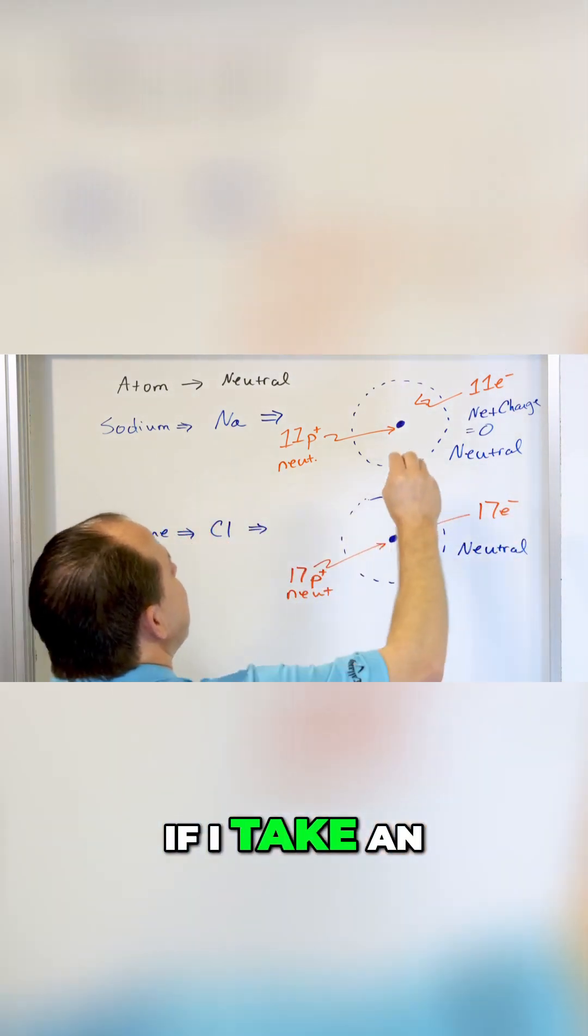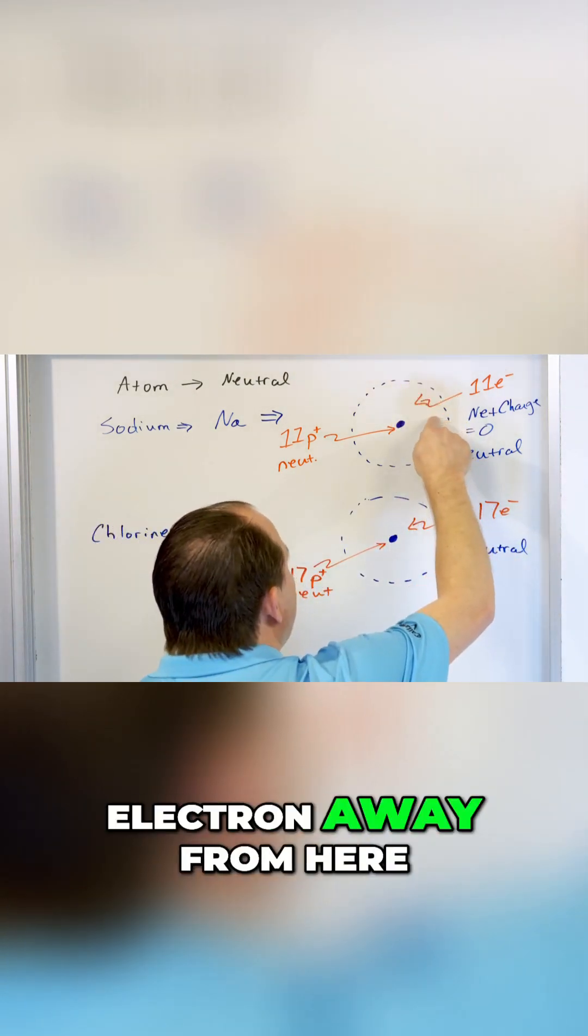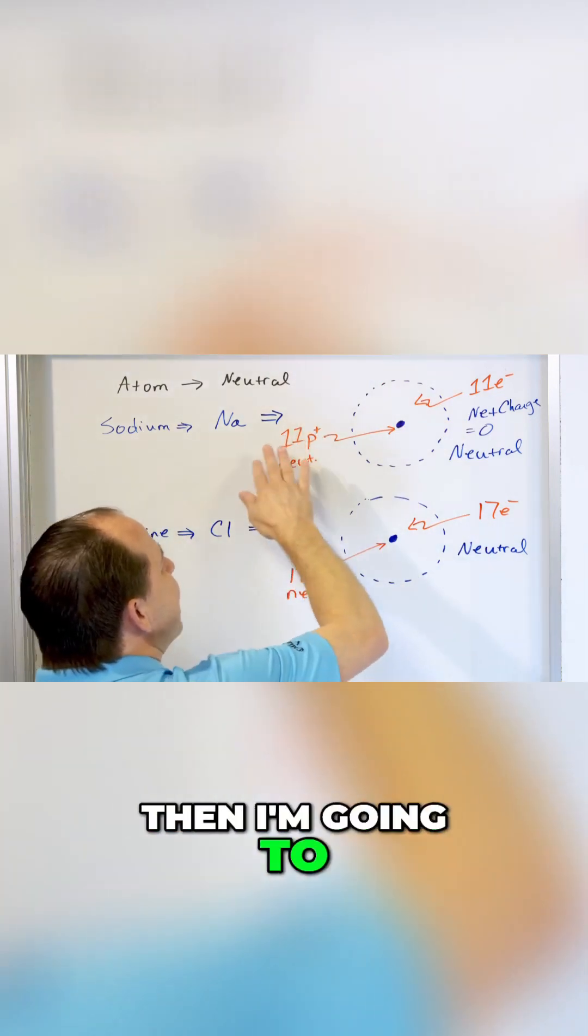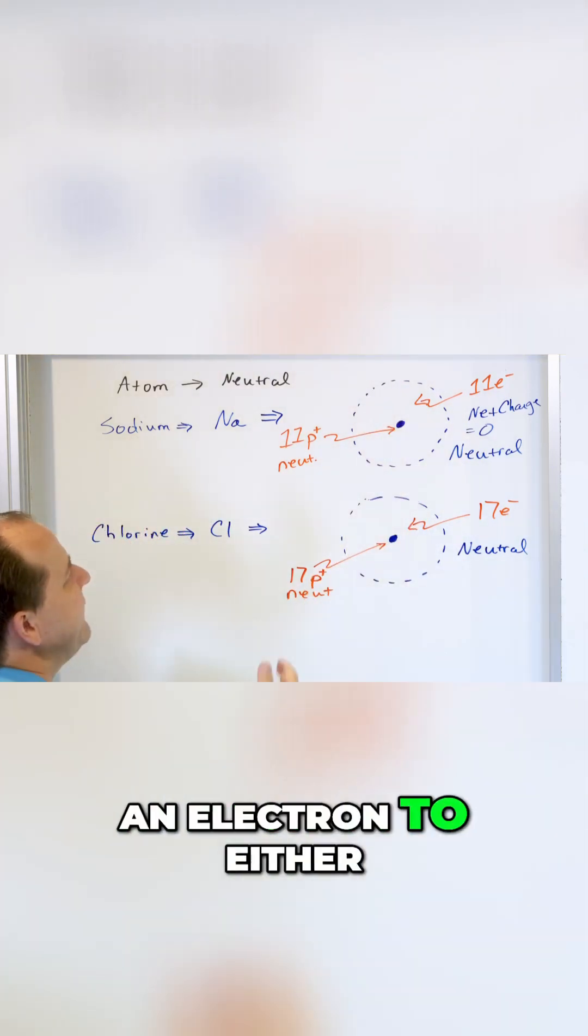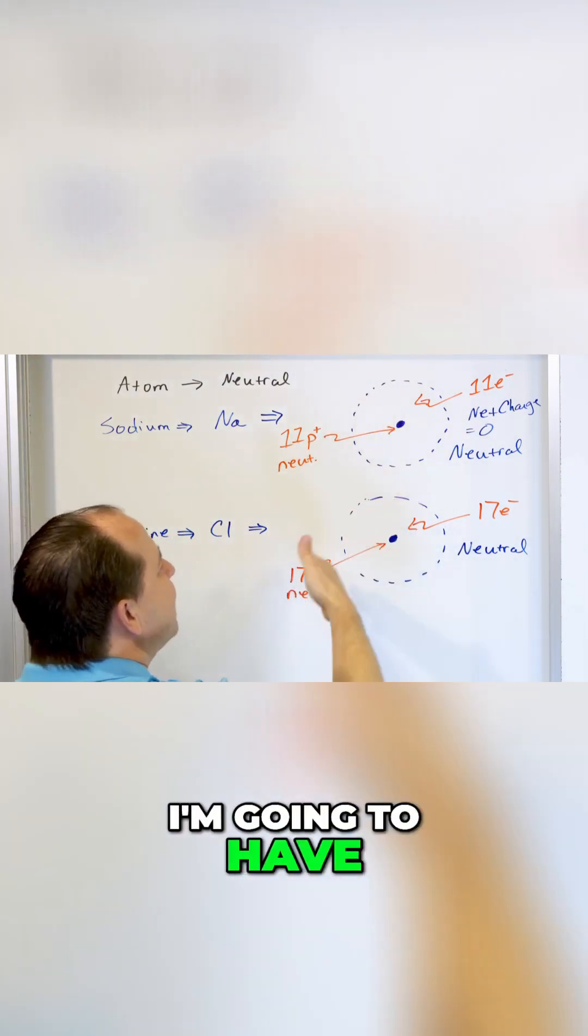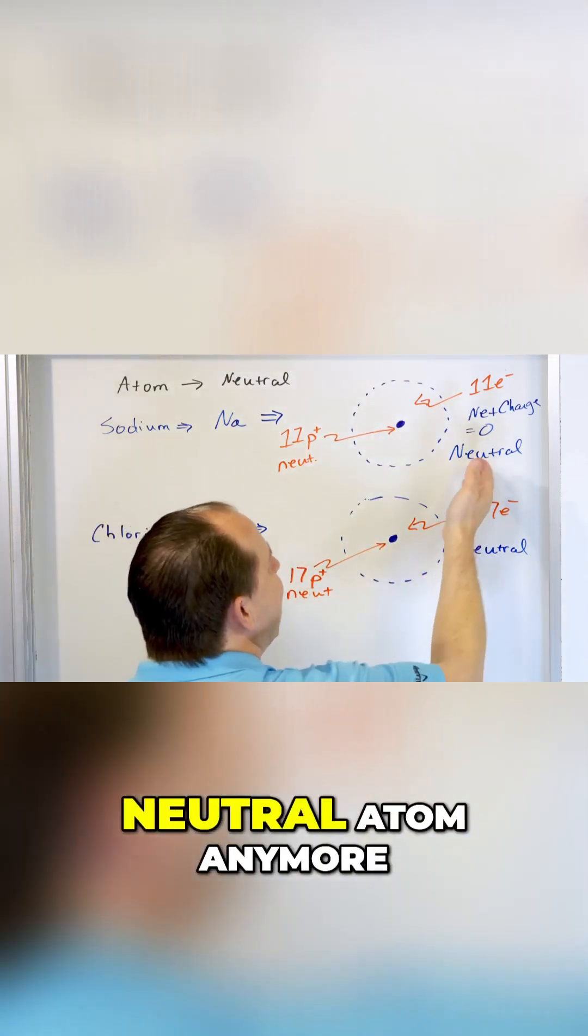If I take an electron away from here, then I'm going to have an imbalance. If I take an electron away from here, or if I add an electron to either one of these situations, I'm going to have an imbalance and I will not have a neutral atom anymore.